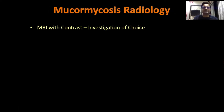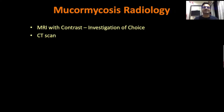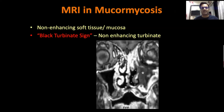Now, what about the radiology? We will first see the common type — the rhinooculocerebral type. MRI with contrast is the investigation of choice, but in our country it may be difficult to get MRI for every patient, so CT scan can also help and most cases have CT scan findings present. On MRI, one particular sign — the black turbinate sign — is very sensitive. Always ensure you give contrast, because this will help you pick up the non-enhancing or necrotic turbinate over and above sinusitis findings. The mucosa will also be non-enhancing in mucormycosis, and this is the sign we specifically look for.